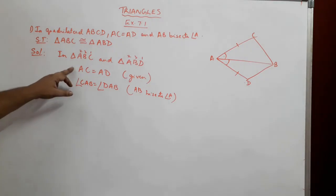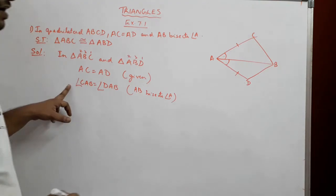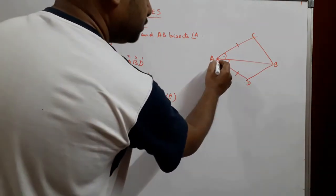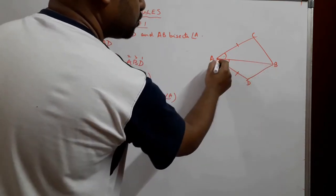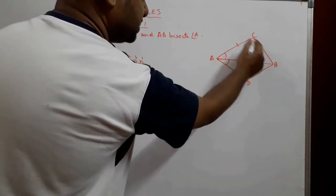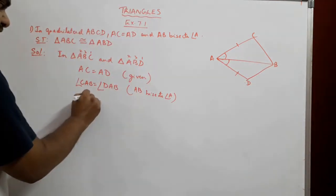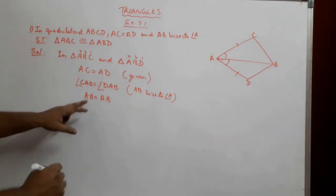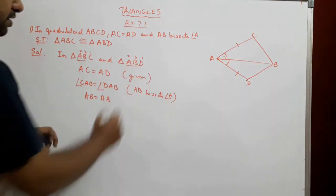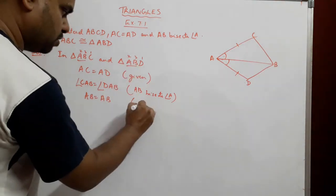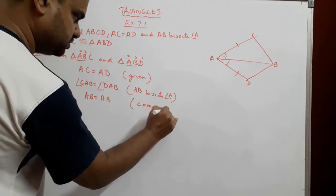Now we have got a side and an angle. Can we get another side? We do — notice that AB is common to both triangle ABC and triangle ABD. So AB is equal to AB, and the reason we write is: common side.